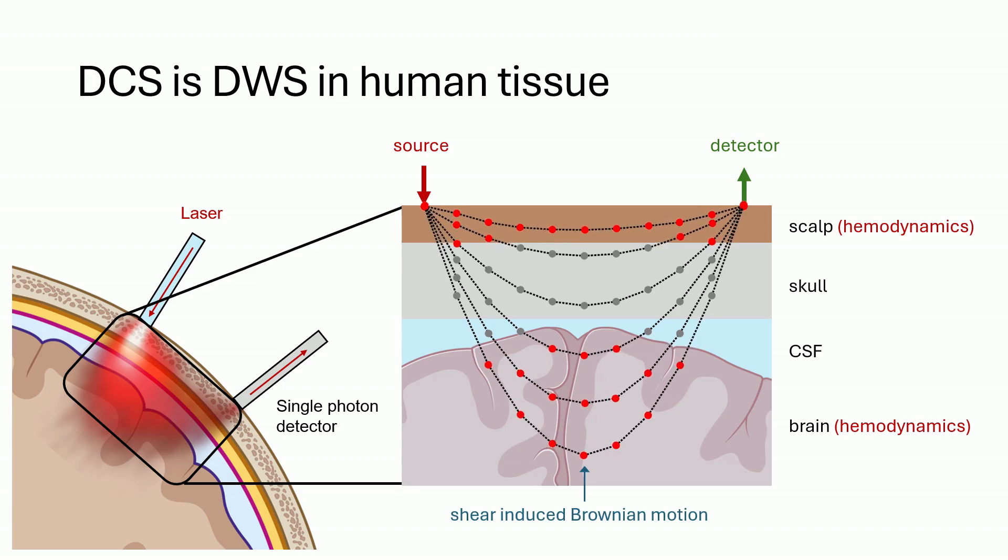Here, the red blood cells are moving according to shear-induced Brownian motion. By the time a light path reaches the detector, its time varying phase will have accumulated the motion fluctuations of all of the red blood cells that it scattered from.